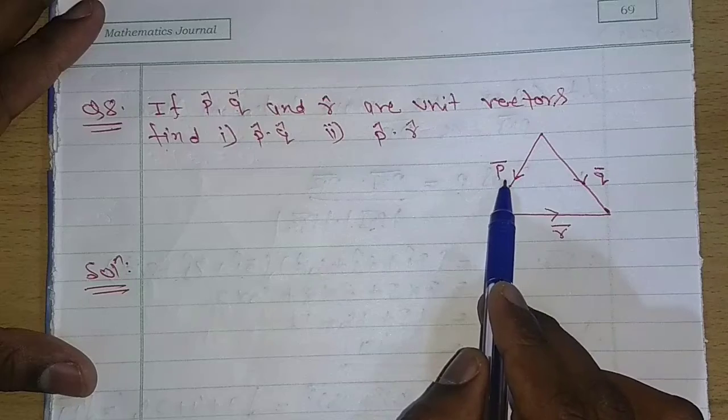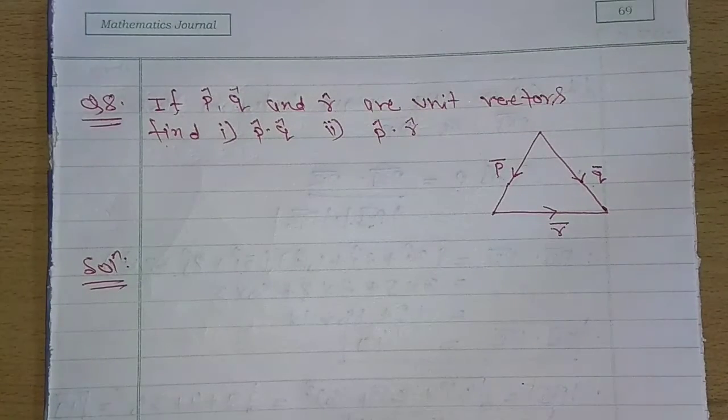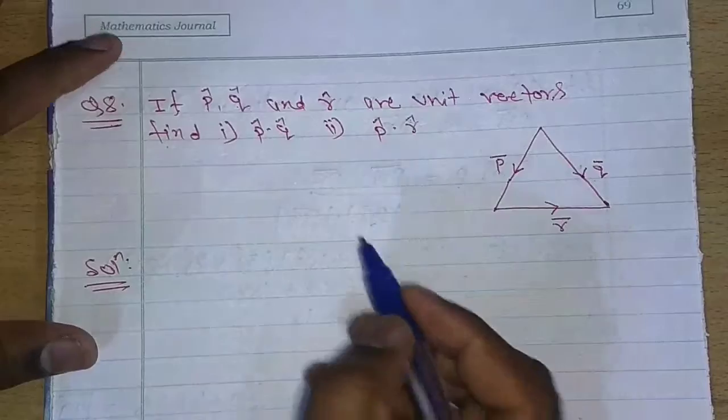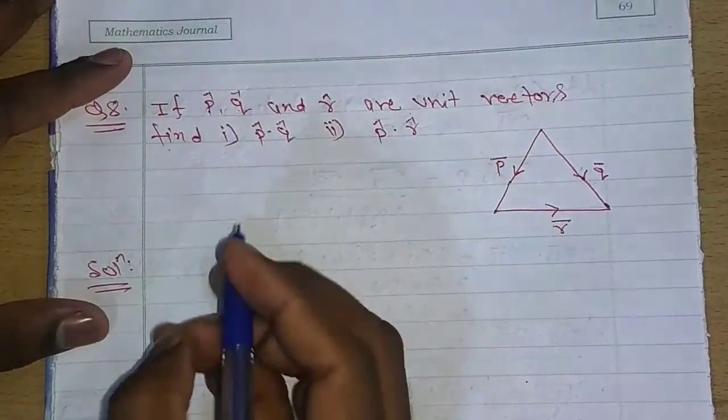P vector, this is R vector, and this is Q vector. So first of all what is given here? P cap, q cap, r cap are unit vectors. So start with here.